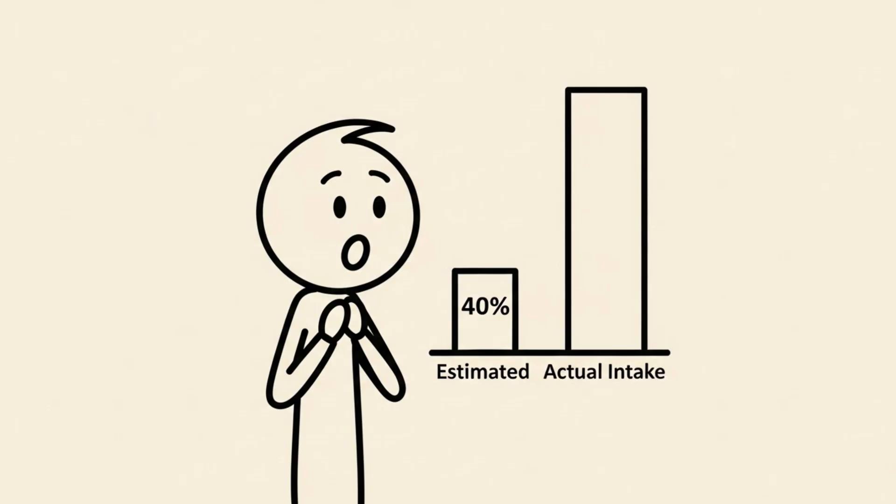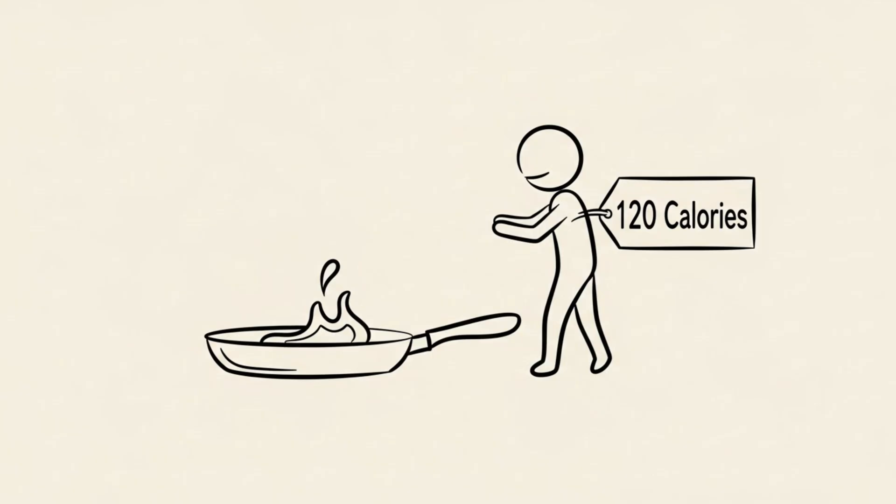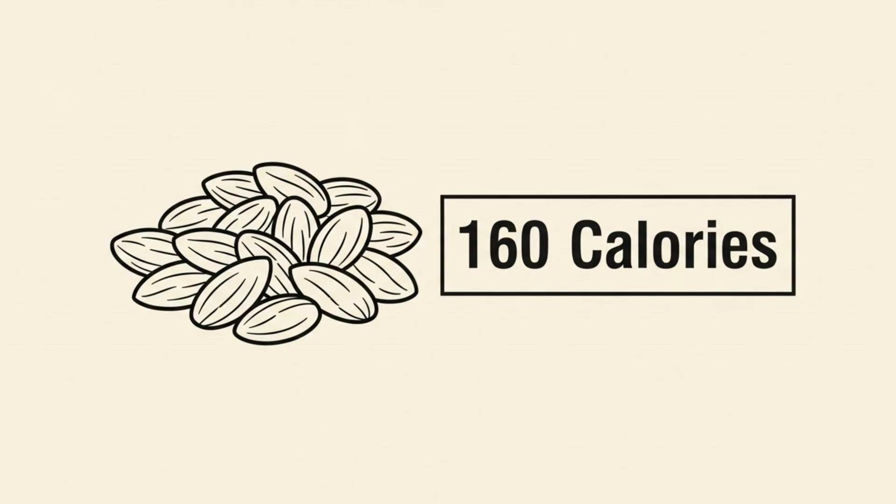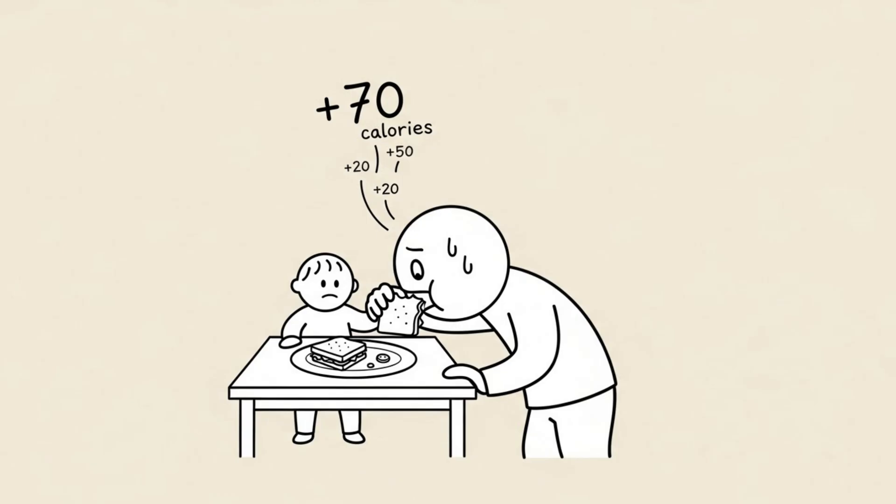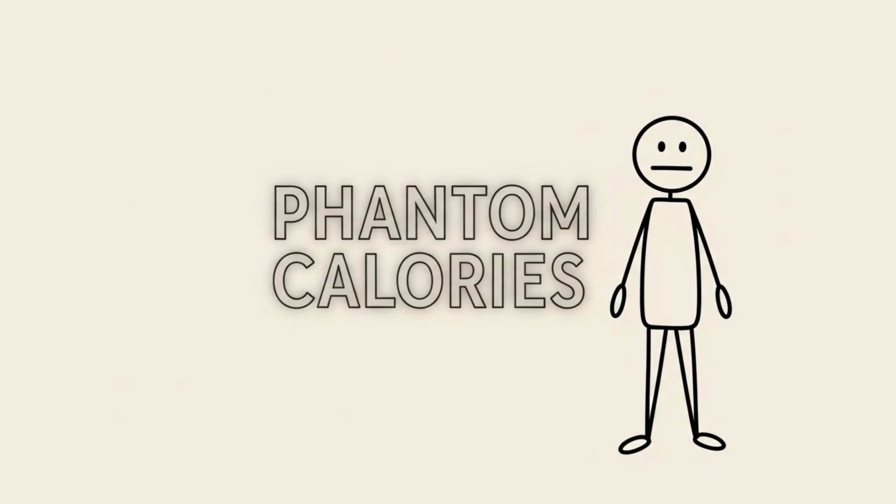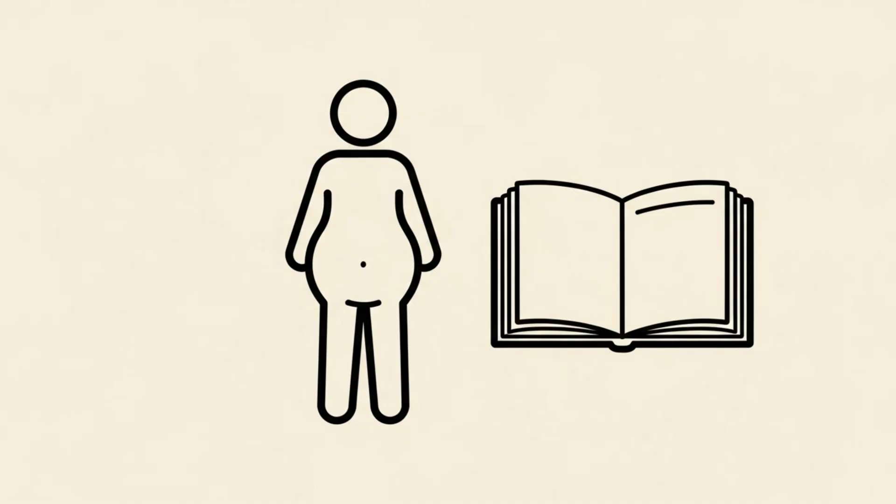Most people underestimate how much they eat by 30-50%. That splash of oil in the pan? 120 calories. That handful of almonds? 160 calories. The bite of your kids' leftovers? It all adds up. We call these phantom calories. They exist on your hips, but they don't exist in your mental log.